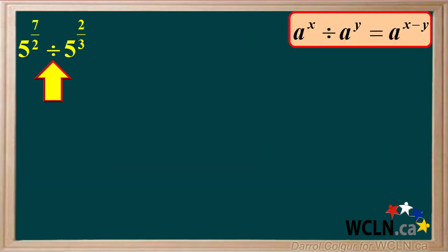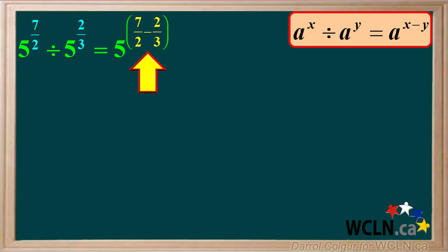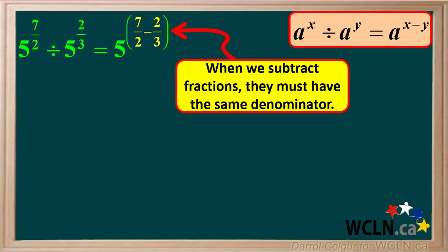Let's divide the same base with fractional exponents. We have 5 to the power of 7 halves divided by 5 to the power of 2 thirds. This gives us 5 to the power of 7 halves minus 2 thirds. Remember, when we subtract fractions, they must have the same denominator.